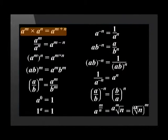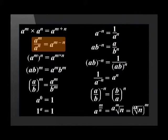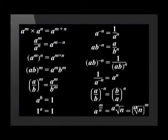a to the power of m times a to the power of n equals a to the power of m plus n. a to the power of m divided by a to the power of n is equal to a to the power of m minus n. a to the power of m raised to the power of n is equal to a to the power of m times n.